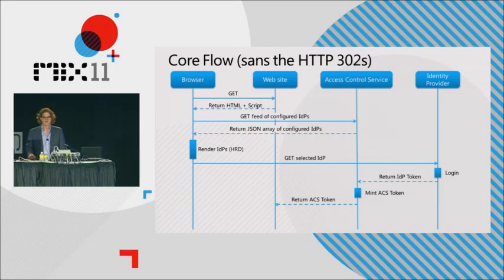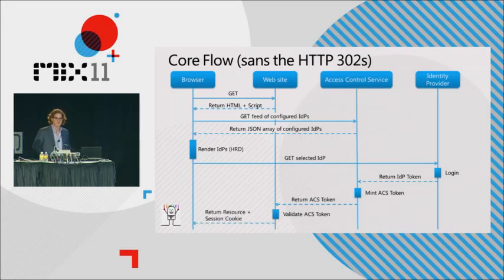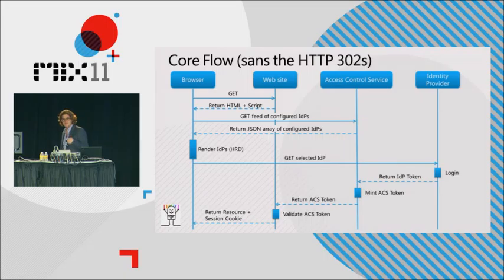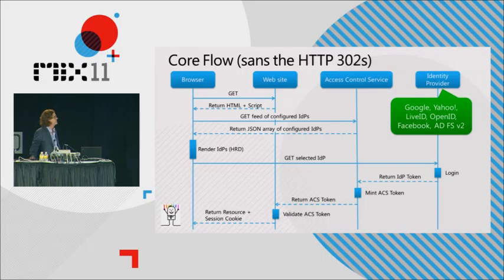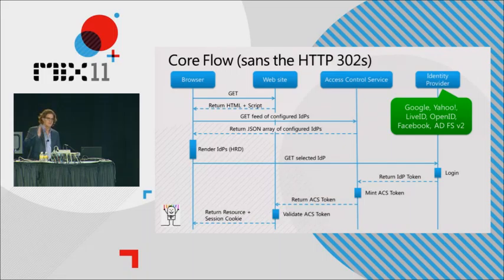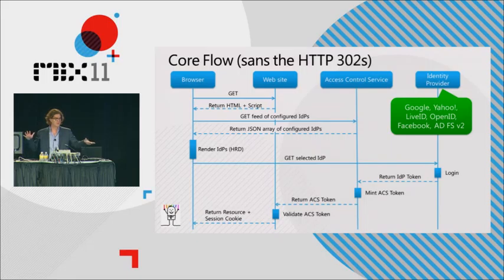After the user logs in, the identity provider returns a token in whatever format it uses - OpenID has a specific format, Facebook has a different mechanism, Live ID another. The access control service validates that token and creates a new token whose contents are driven by the ACS configuration. That ACS-issued token is returned to your site. Your site gets basically the same token independent of whatever identity provider the user used to log in. Using this approach, you can integrate with Google, Yahoo, LiveID, any OpenID provider, Facebook, or ADFS v2 - bringing consumer and enterprise identity worlds together.